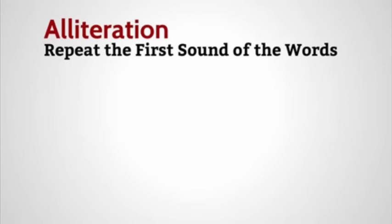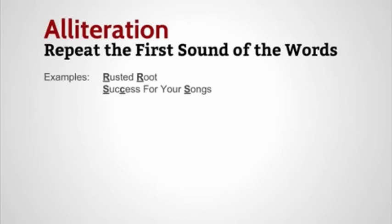Alliteration is simply a repetition in the first sound of your words in a phrase. An example of alliteration would be 'rusted root' — you hear that R sound twice. Even the name of this website, Success for Your Songs, is definitely intentional. That S sound gets repeated a few times.